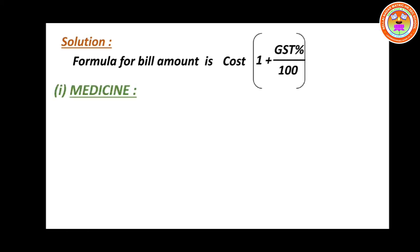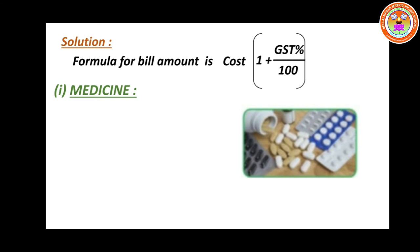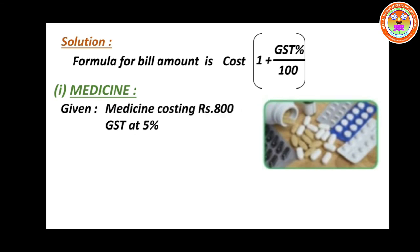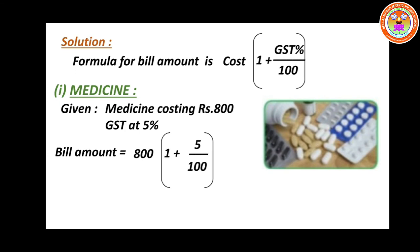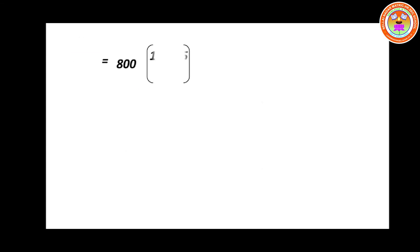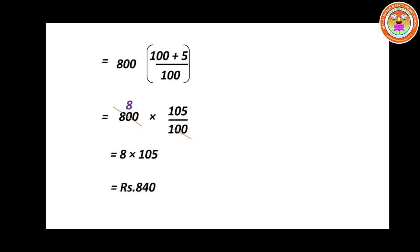First, medicine. Medicine costing is Rs.800 and GST is 5%. Substitute in the formula: bill amount equals 800 into (1 plus 5 divided by 100). That is 100 plus 5 equals 105, so 800 into 105 divided by 100. You can cancel 100 and 800 — 8 times. Now multiply 8 into 105. Your final answer is Rs.840. So the bill amount for medicine alone is Rs.840.